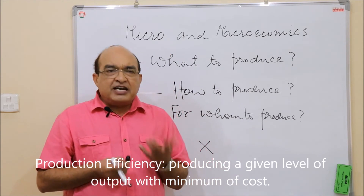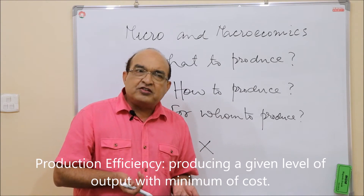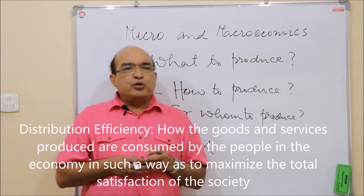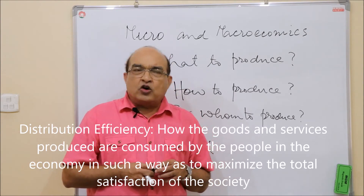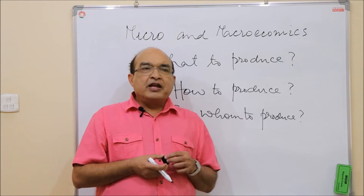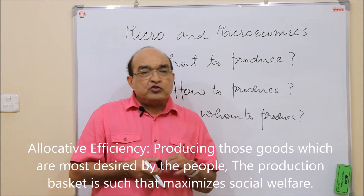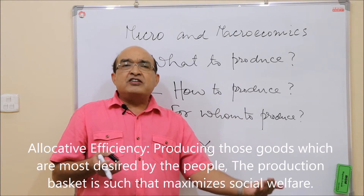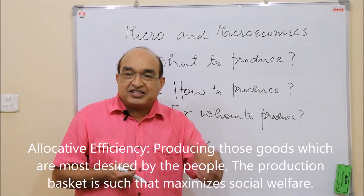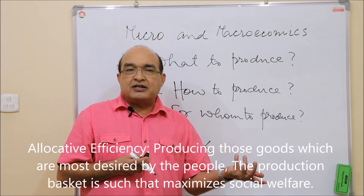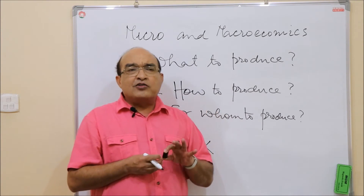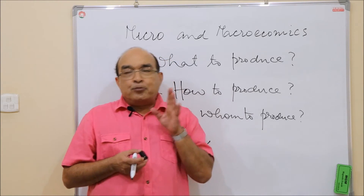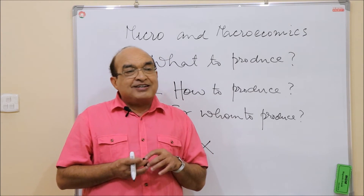Efficiency can be of three kinds. First, production efficiency — producing a given level of output with minimum cost. Second, distribution efficiency, also known as consumption efficiency — how goods and services produced are consumed by people in the economy so as to maximize total satisfaction of society as a whole. Third, allocative efficiency — producing those goods most desired by people, such that the production basket maximizes social welfare.